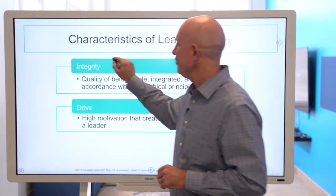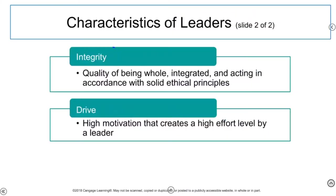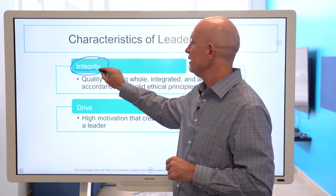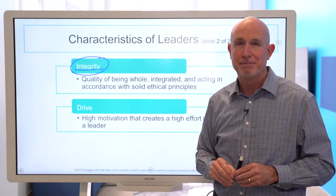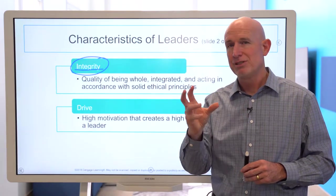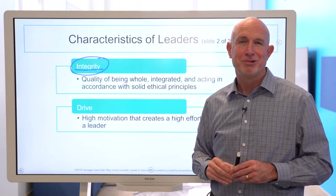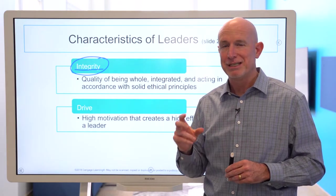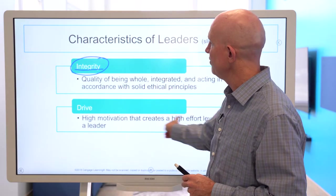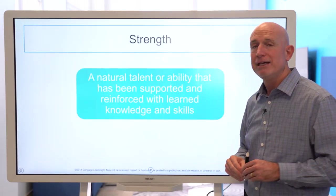Integrity is a big one today. We think of the SNC-Lavalin case in which executives bribed officials in Bangladesh and Libya and are now dealing with the fallout from that. A lack of integrity can undermine leadership effectiveness very quickly. Trust is pivotal to good leadership. Stephen Covey wrote a book called The Speed of Trust, and there is much work being done on how to develop and sustain trust in leadership.